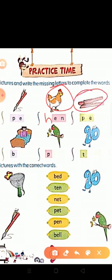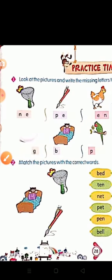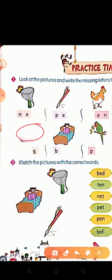Next picture is chimti. P, E, G, peg. Look. What is this? This is egg. E, G, G, egg. Next picture is bed. B, E, D, bed.